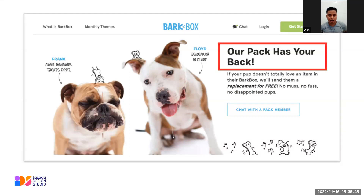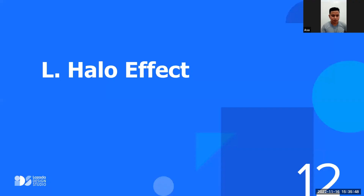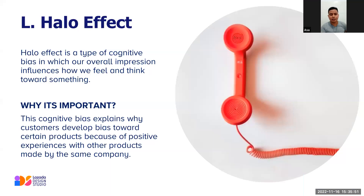Next is the Halo Effect. The Halo Effect is a type of cognitive bias in which our overall impression influences how we feel and think toward something. This bias explains why customers develop a bias toward certain products because of a positive experience with other products made by the same company.